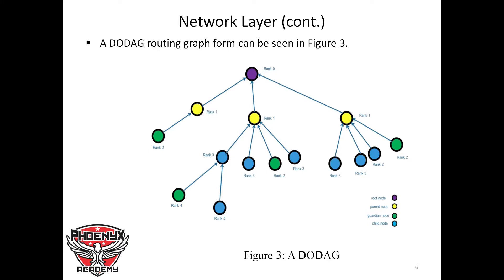In a DODAG, the root node has the lowest rank — rank 0 or rank 1 — and the rank increases as we move further down into the network. So the closer a node is to the root node, the lower its rank. We have the parent node, the children node, and the leaf node, as seen in the diagram.